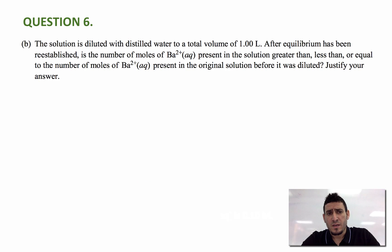The question says, the solution is diluted with distilled water to a total volume of 1 liter. After equilibrium has re-established, is the number of mole of Ba 2+ present in the solution greater than, less than, or equal to the number of moles of Ba 2+ present in the original solution before it was diluted? Justify your answer.